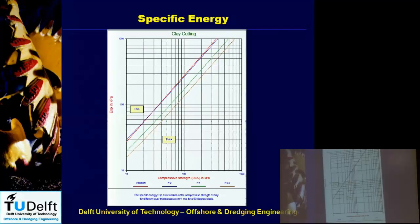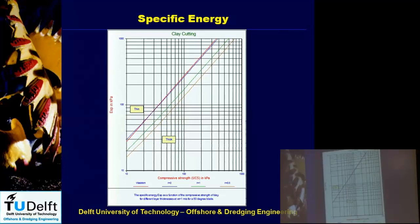The previous specific energy graphs were all for the flow type without tensile cracks. For the tear type with tensile cracks, using the reduced shear stress I can also calculate the forces and specific energy. For a very thin layer of clay there is much more adhesion, so a thin layer has higher specific energy than a thick layer, which is visible in the graph.